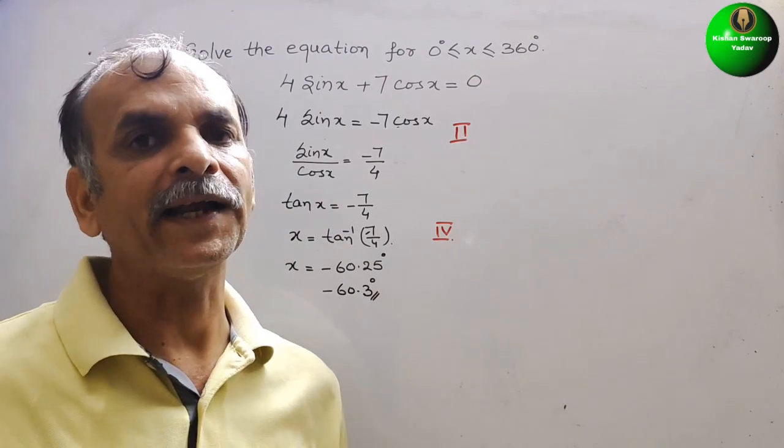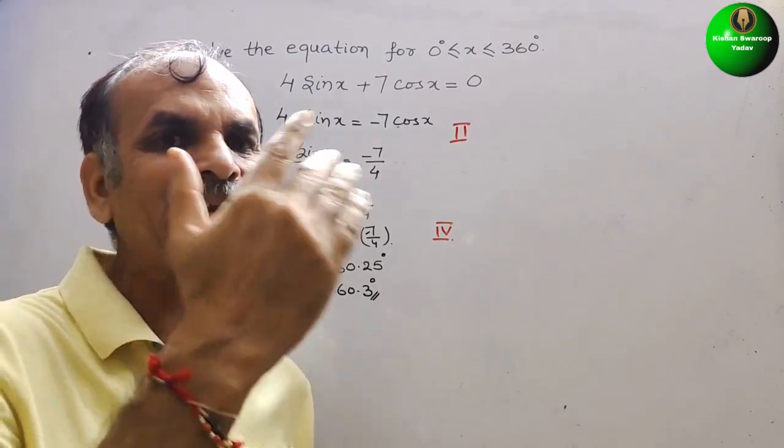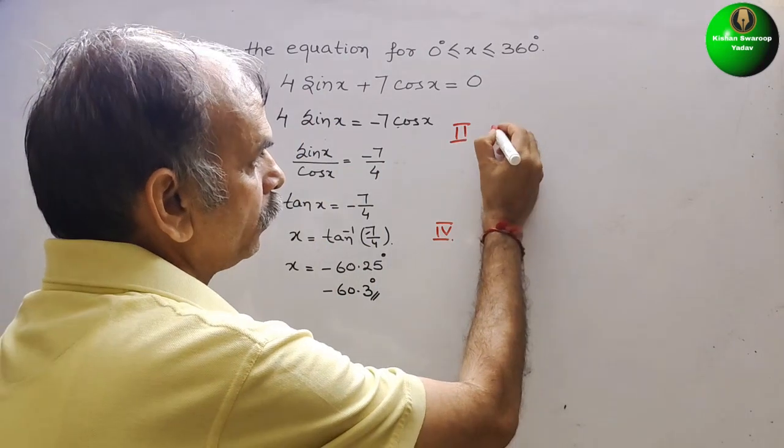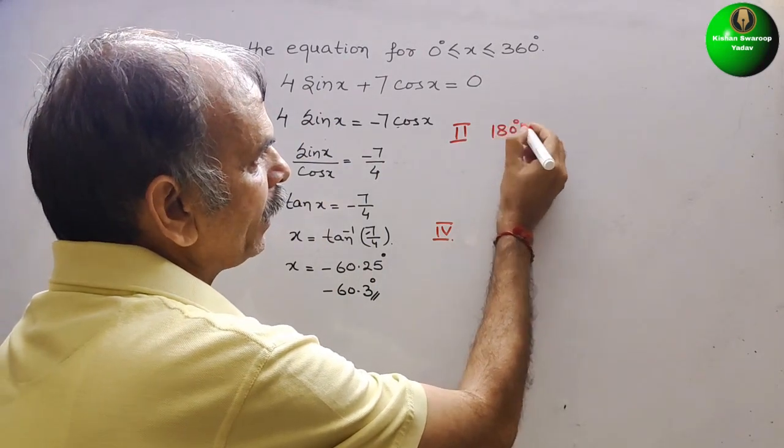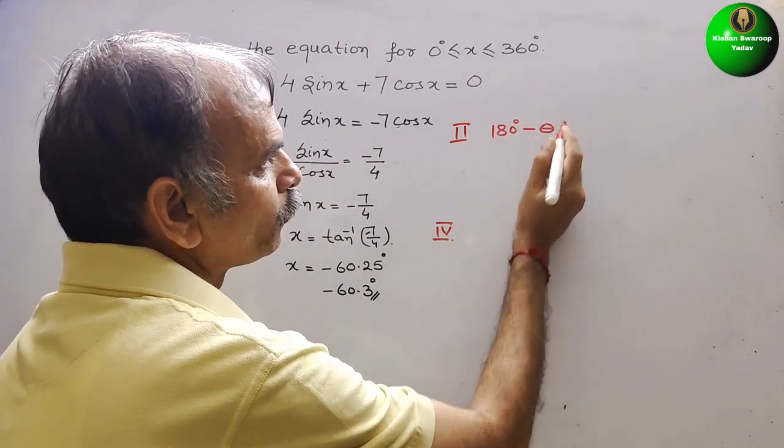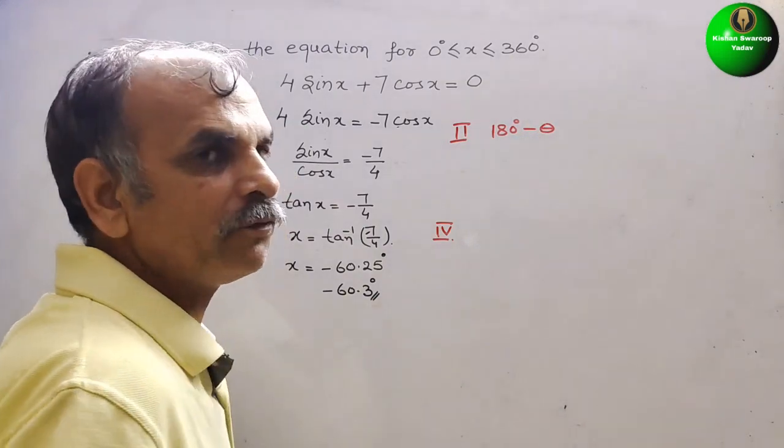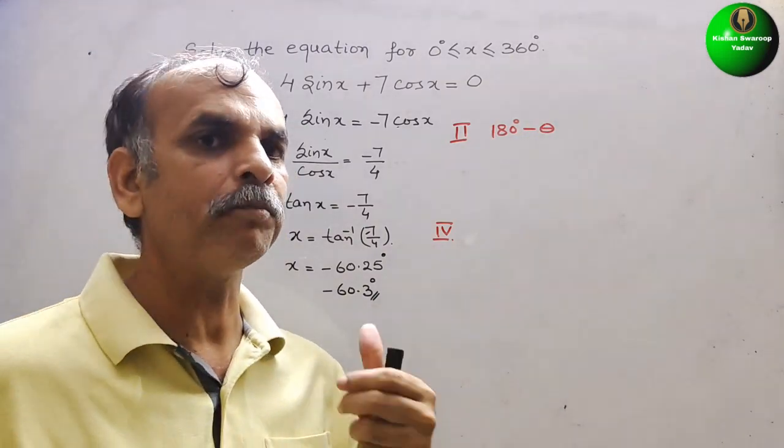So second quadrant and fourth quadrant. Second quadrant how we are writing? 180 degrees minus theta. And fourth quadrant we are writing 360 degrees minus theta.